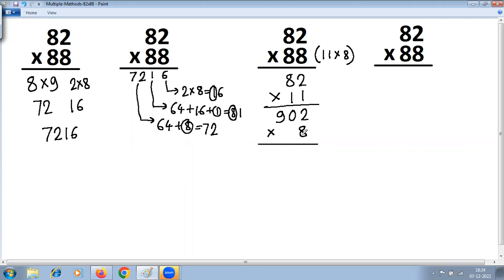8 into 2 is 16, 6 carry 1. 8 into 0 is 0 plus carry 1 is 1. 8 into 9 is 72. Same answer: 7216. We can even use series of 9 by converting 88 as 99 minus 11.